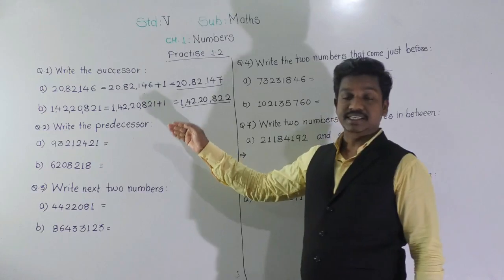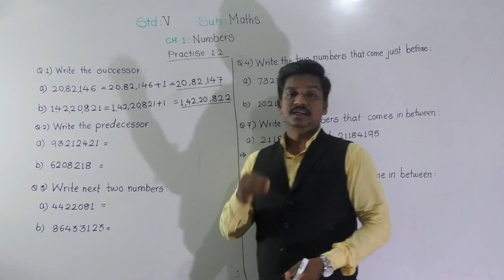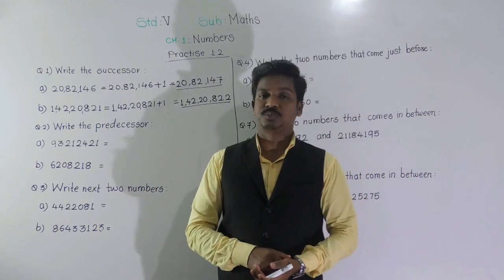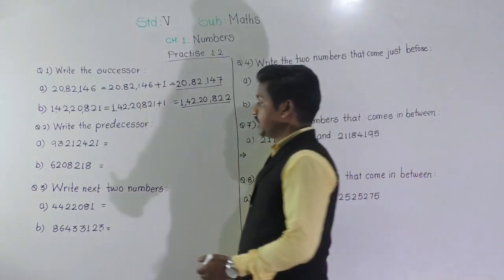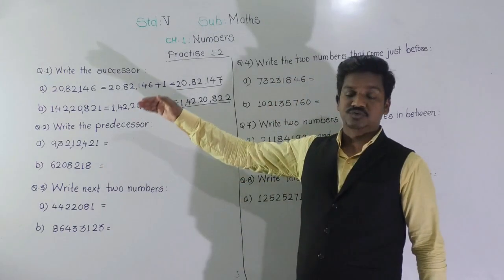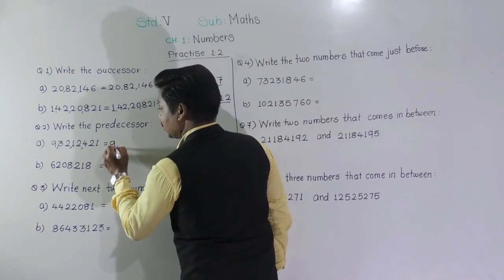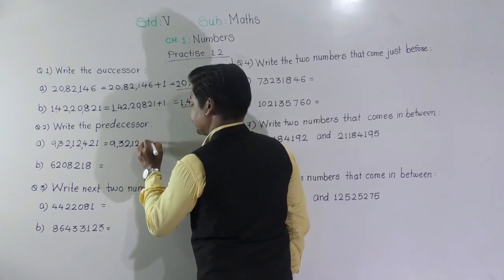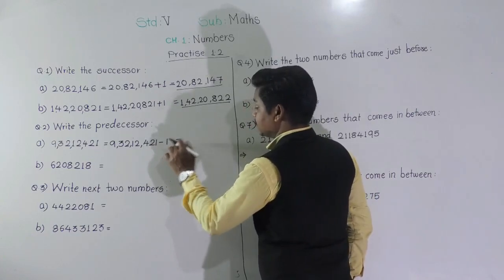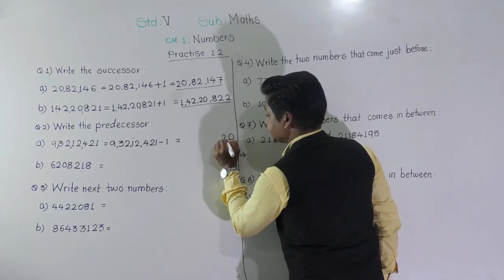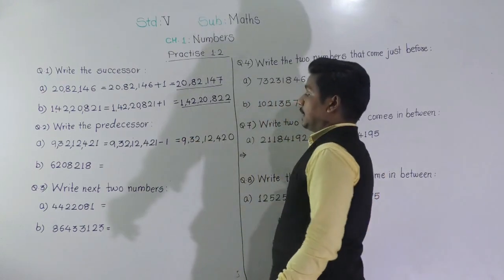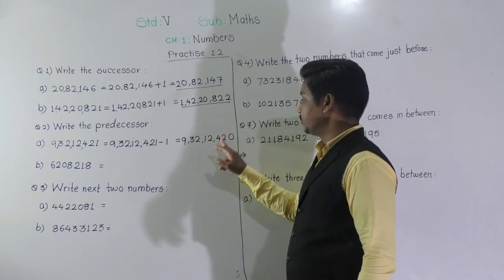Question number 2: write the predecessor of the following numbers. Predecessor means the number which comes just before the given number — the number obtained by subtracting 1 from the given number. Let us find the predecessor of 9,32,12,421. To obtain the predecessor, we subtract 1. At the ones place there is 1, so 1 minus 1 gives 0, and all remaining digits stay the same. The predecessor is 9,32,12,420.